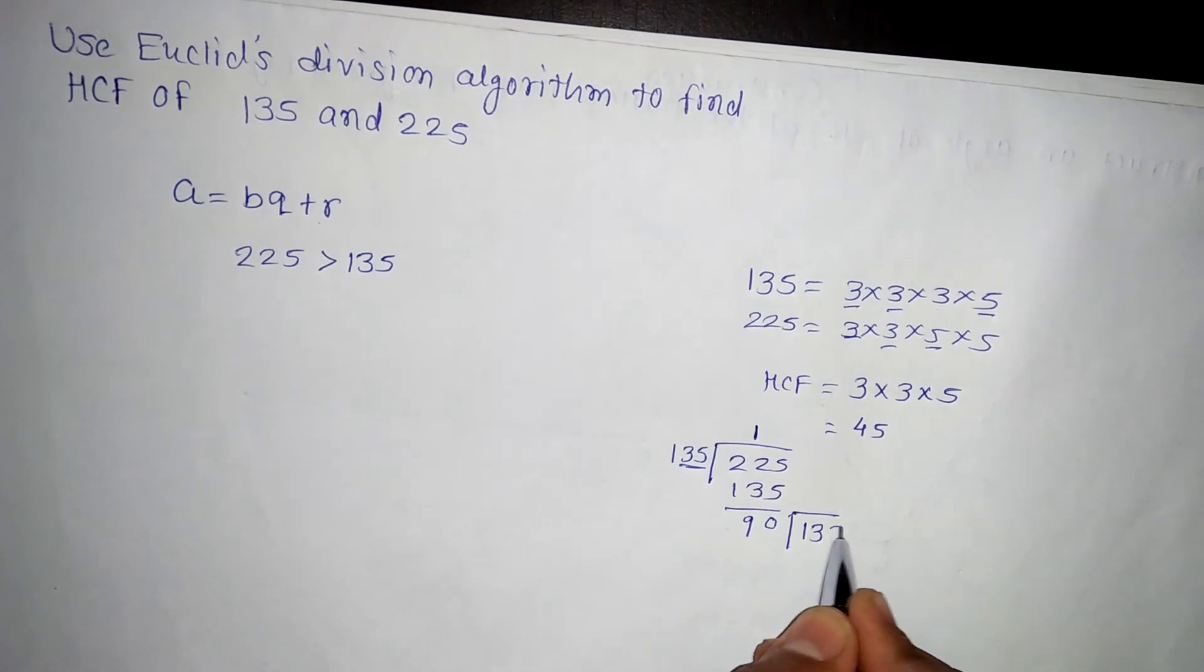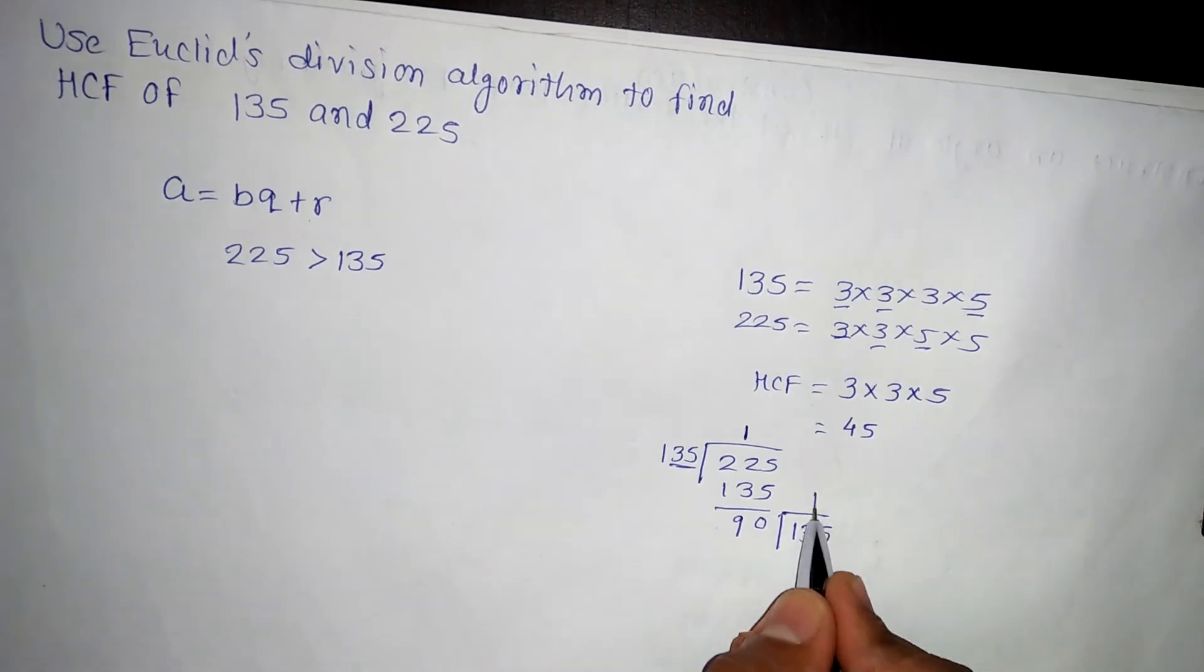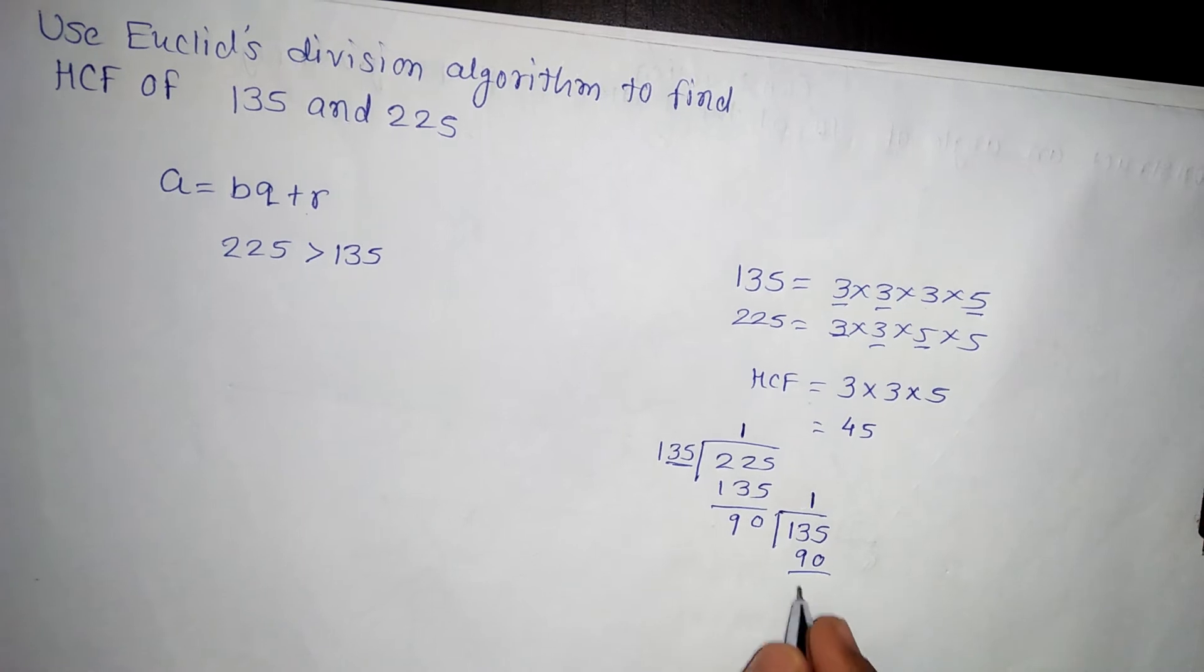So I'll write 135, I'll try to divide by 90. Again 90 times 2 is 180. So 90 times 1 is 90. The difference will be 45.